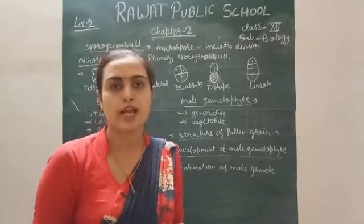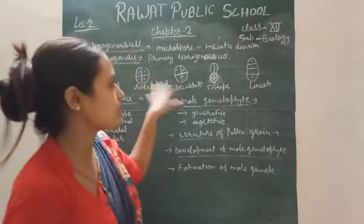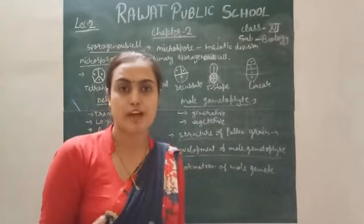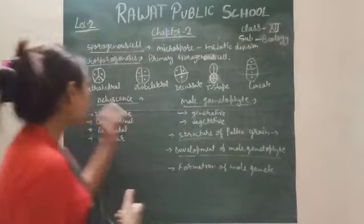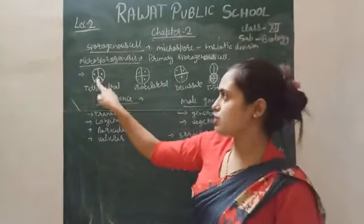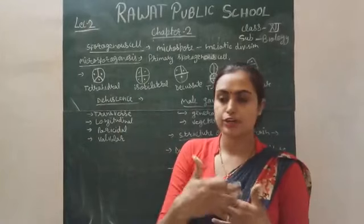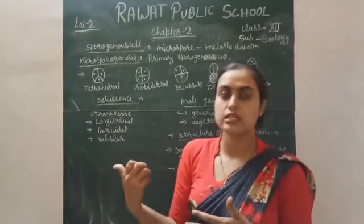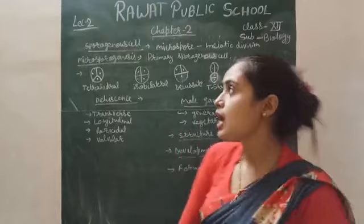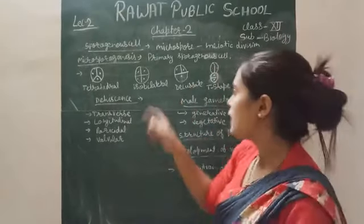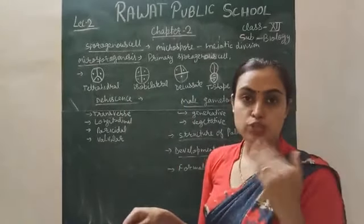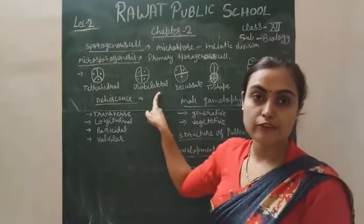From one microspore mother cell, four daughter cells arise and these four daughter cells arrange in different manners in different species. The first arrangement is tetrahedral: three microspores are arranged on the upper side and one daughter cell is behind them. This tetrahedral type is found in most dicotyledon plants. Next is the isobilateral type, where all four daughter cells are on the same side, which is found in most monocots.